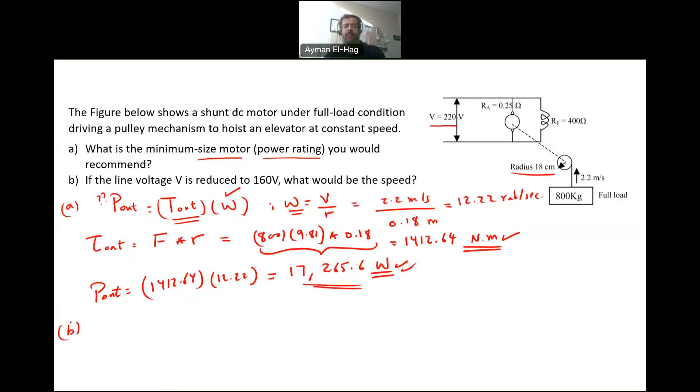Straightforward, different but straightforward. Now, if the line voltage is reduced to 160, so here the voltage is 220, we reduce this into 160 volt. What will be the speed? If we maintain the same torque and we just change the voltage, this is the first time in a shunt question we change the voltage. Always we assume the voltage is constant, and that will make the problem different.